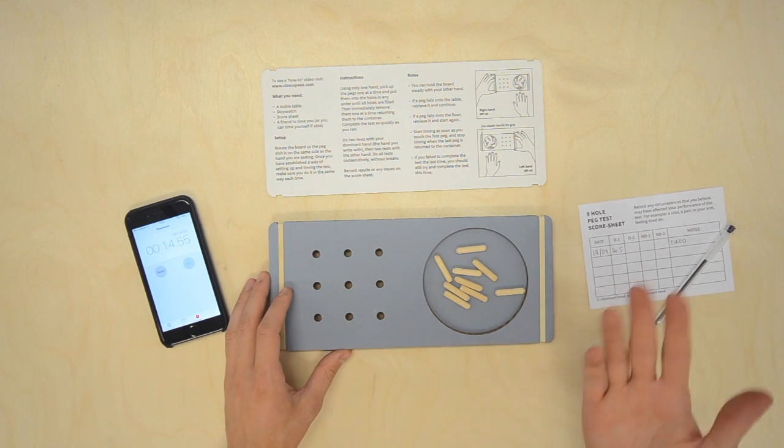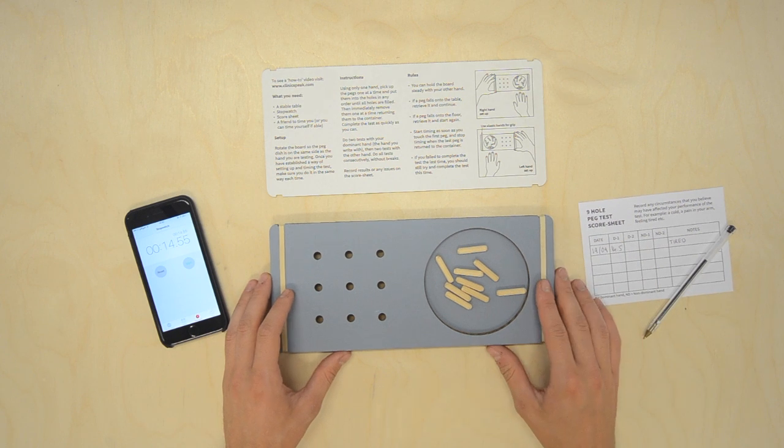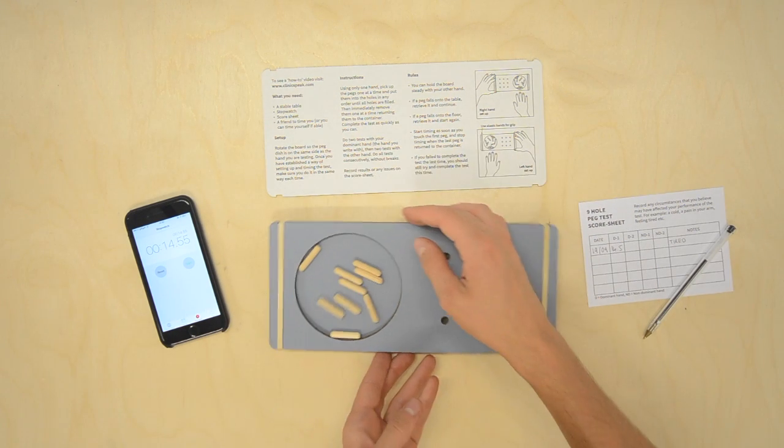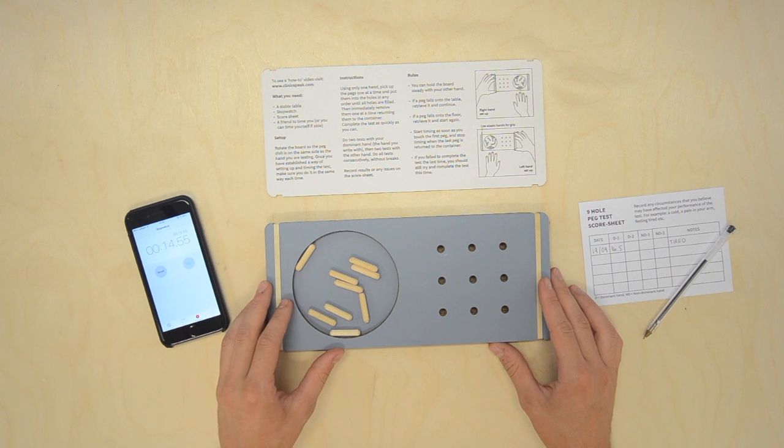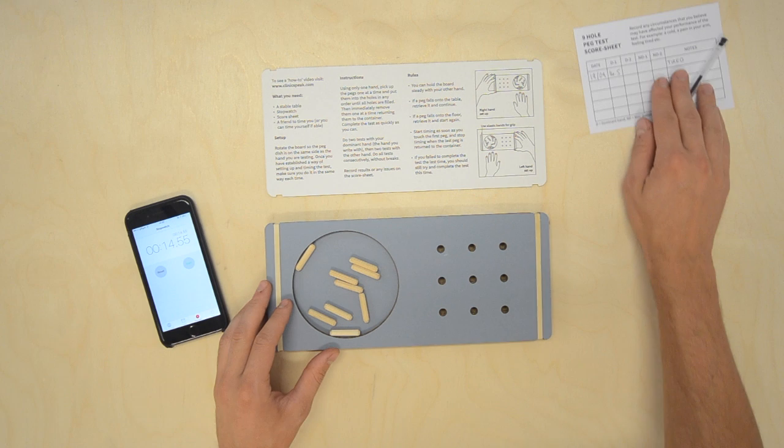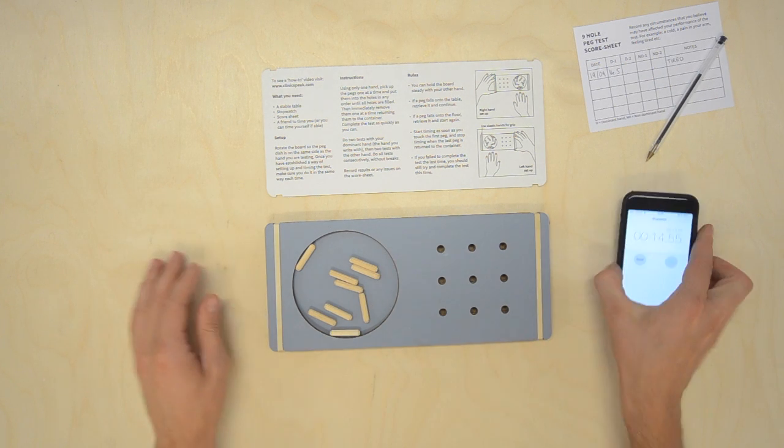Do two tests with your dominant hand. Once you have completed these two tests, rotate the board and do two further tests with your non-dominant hand. You need to do all the tests consecutively, without breaks.